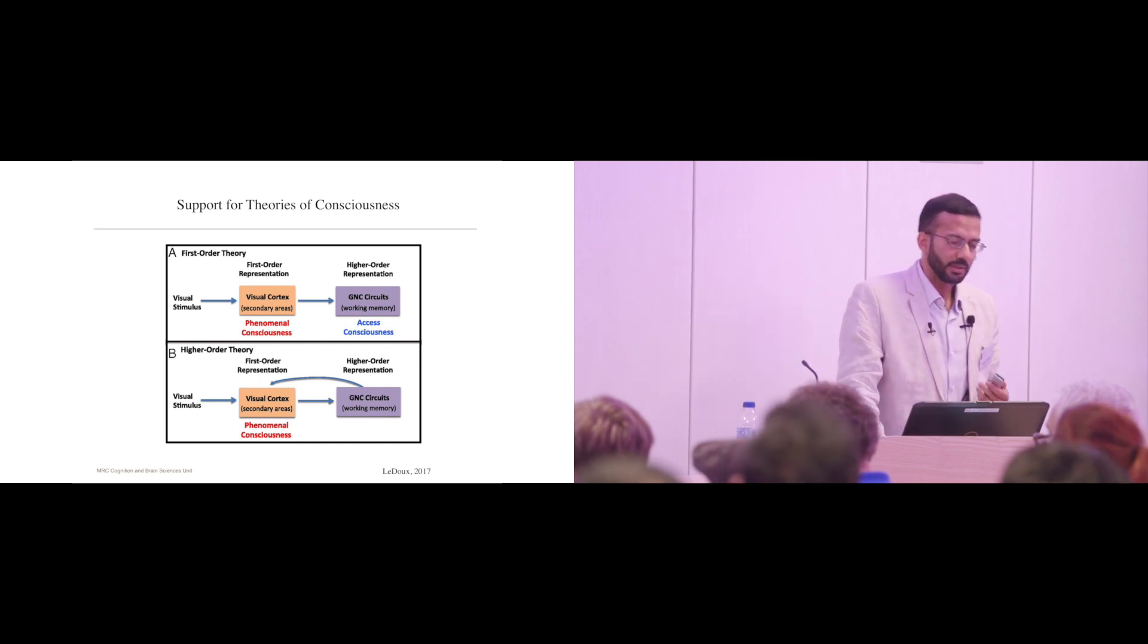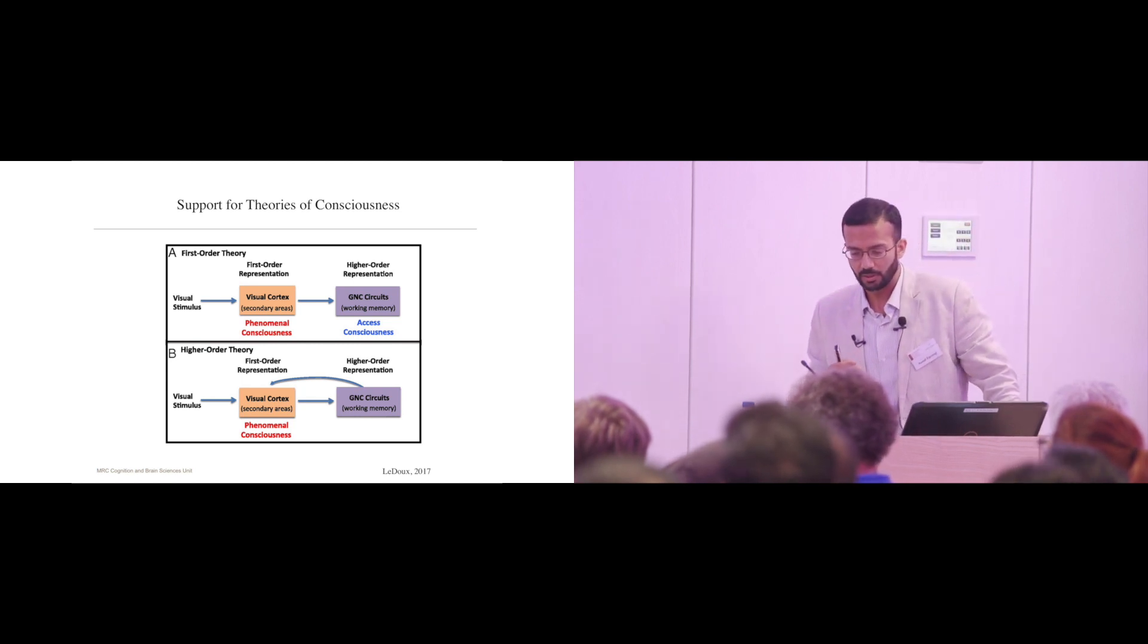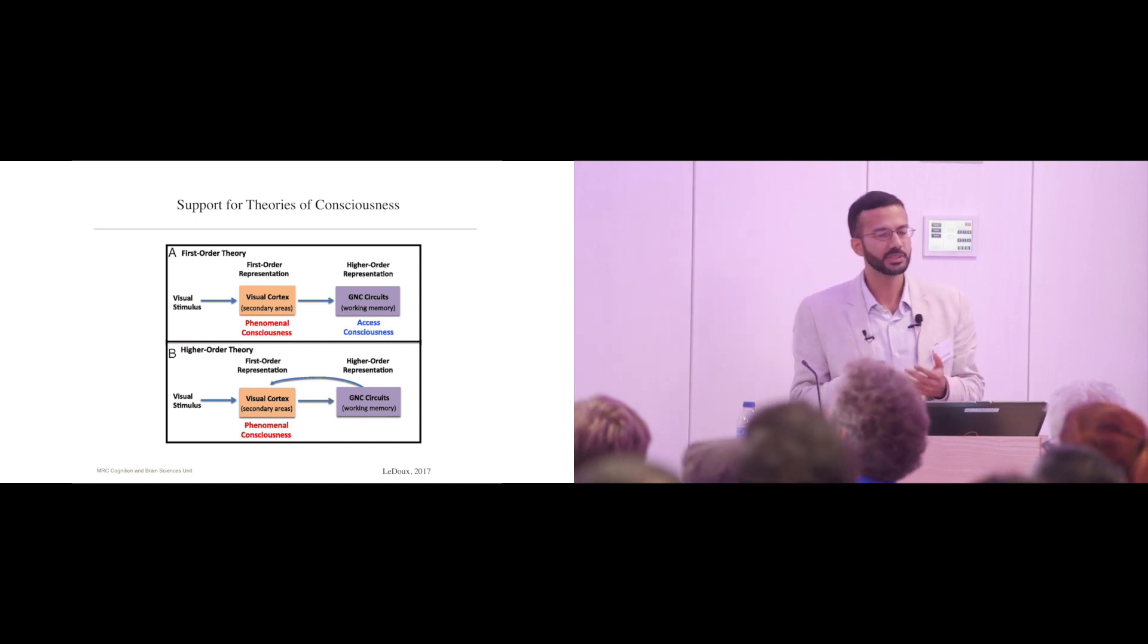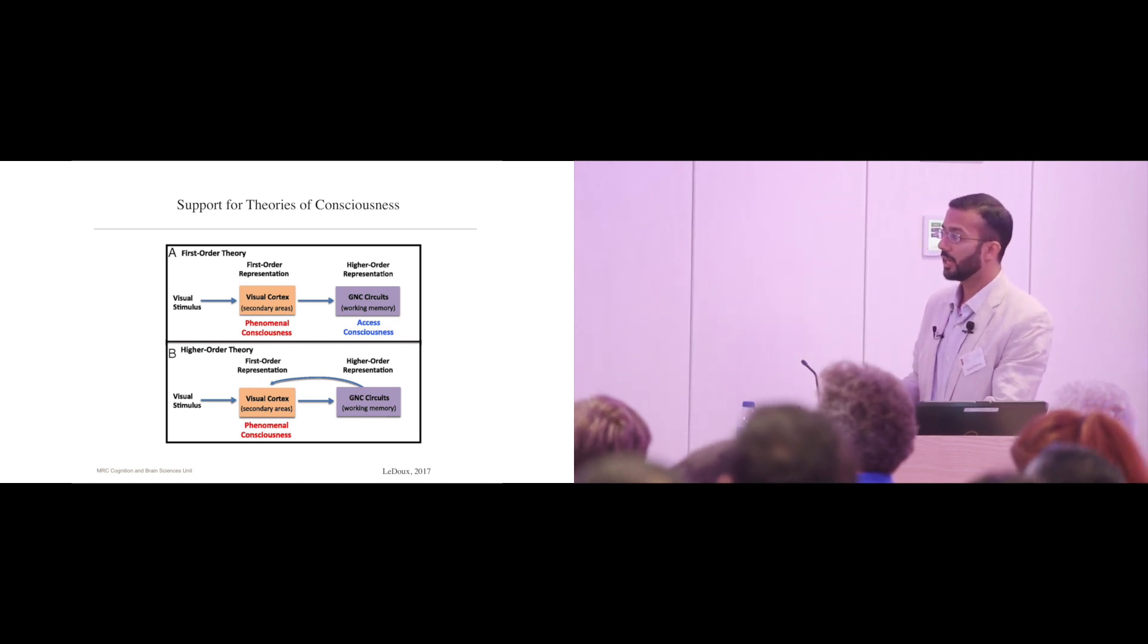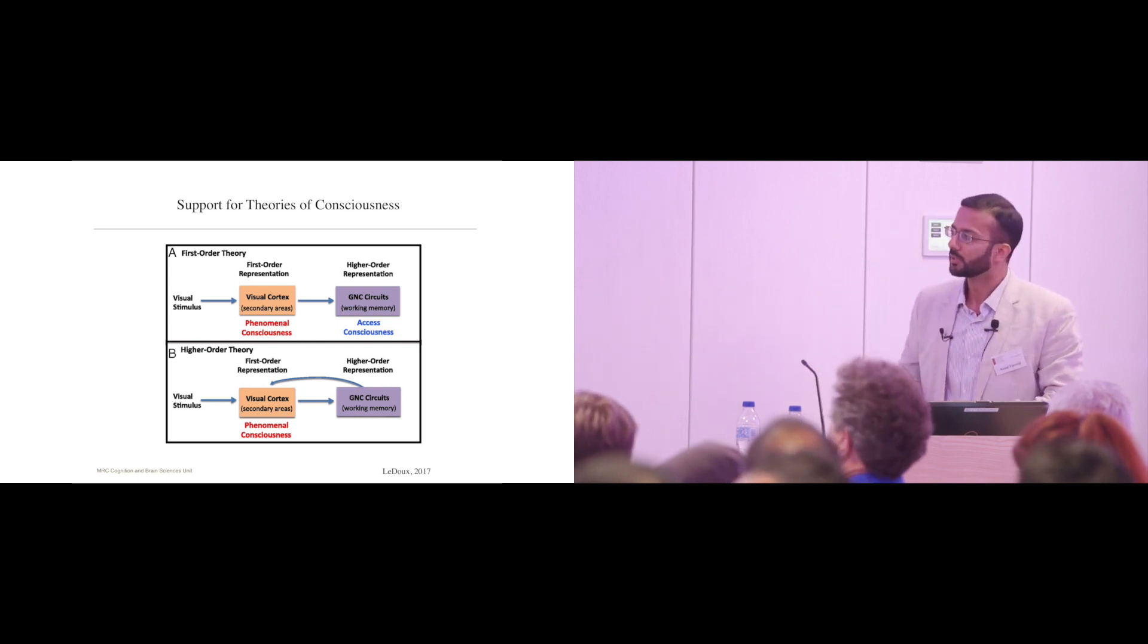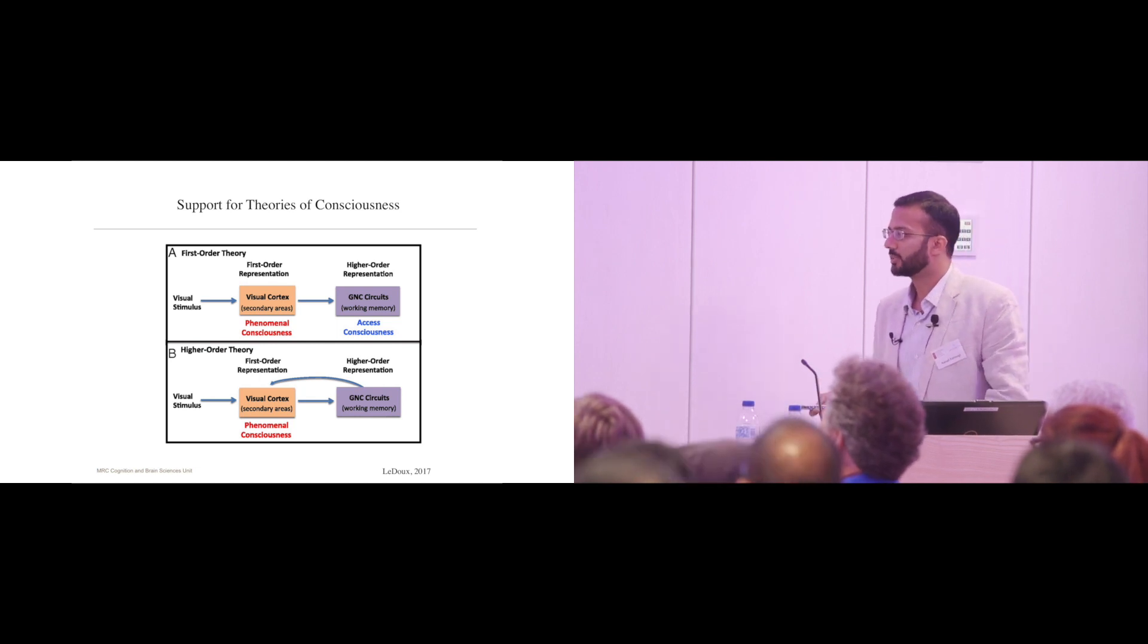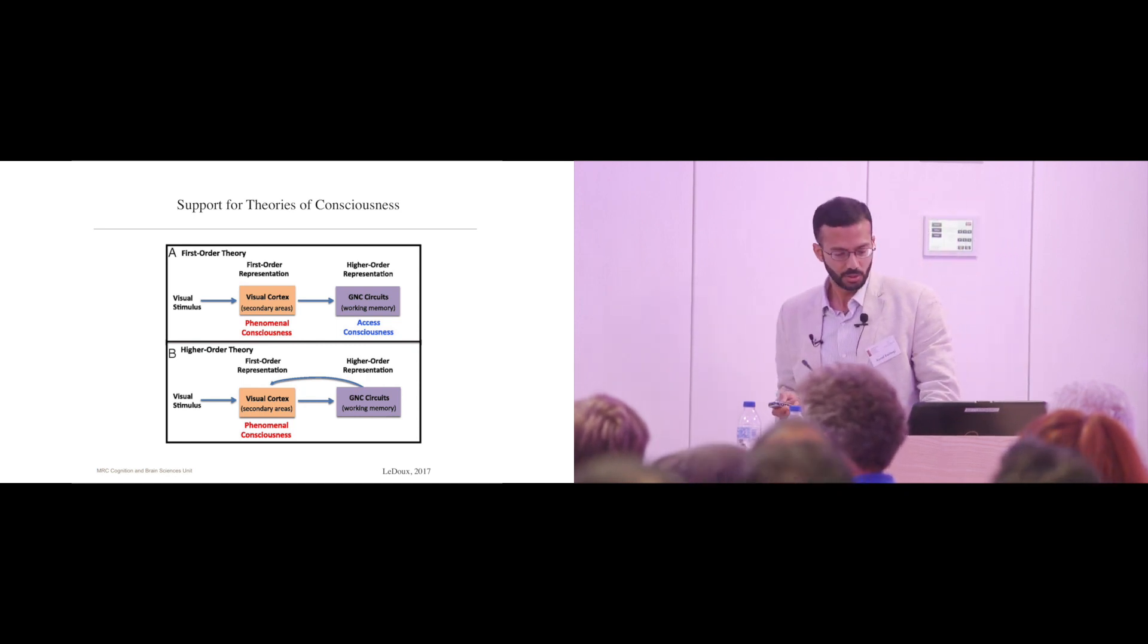It's very difficult to move from neural findings to philosophical theories, but proponents of various philosophical theories of consciousness find support in this view. For example, proponents of higher-order theories of consciousness will say it supports them because visual cortex is the first-order representation. Higher-order theories in simplest terms have that consciousness occurs when you re-represent a representation. In this case, the first-order representation occurs at the sensory cortex, and only when that representation gets re-represented into the frontal-parietal region do we have a conscious percept.